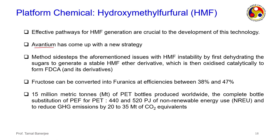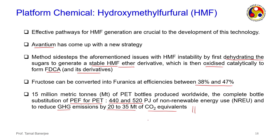Avantium has developed a new strategy: sidestep HMF instability issues by first dehydrating sugars to generate a stable HMF ether derivative, which is then catalytically oxidized to form FDCA. Fructose can be converted to furanics at efficiencies between 38 to 47 percent. If successful, this could replace approximately 15 million metric tons of PET bottles worldwide, saving 440–520 petajoules of non-renewable energy and reducing greenhouse gas emissions by 20–35 million metric tons of CO₂ equivalent.